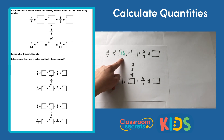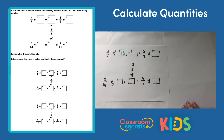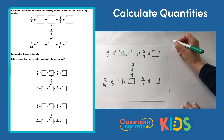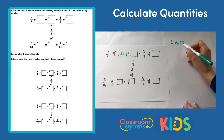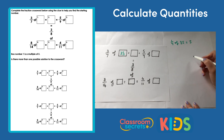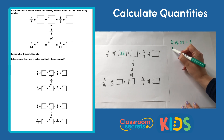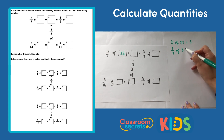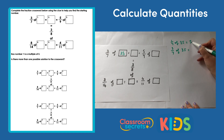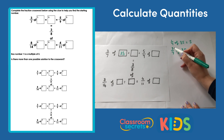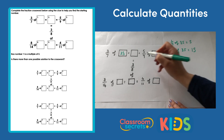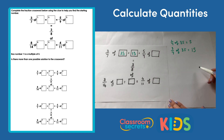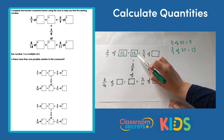Now we can find three sevenths of 35. First, we find one seventh of 35 by dividing by the denominator: 35 divided by seven equals five. Now we have the unit fraction, we can find three sevenths of 35 by multiplying five by three, which gives us 15. So 15 goes in the next box.